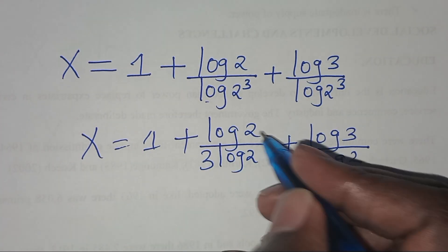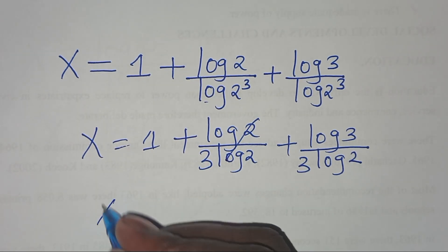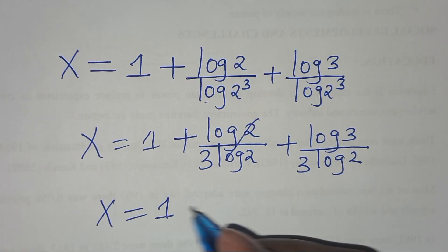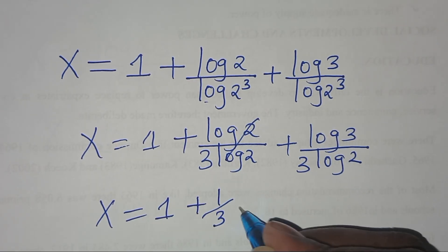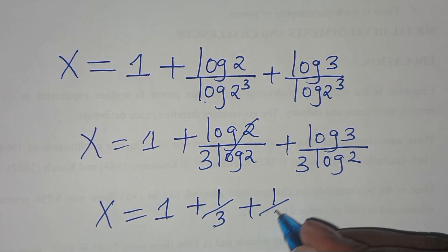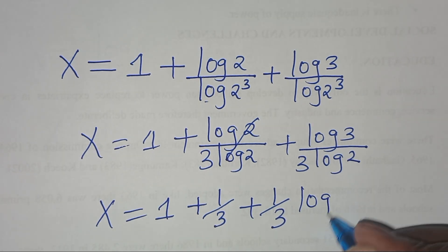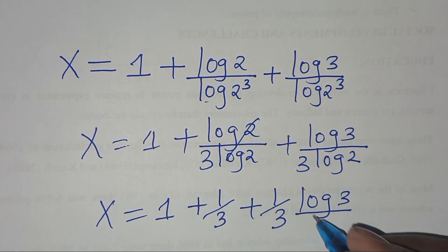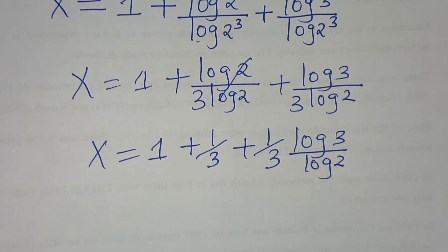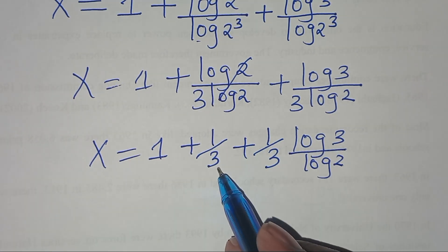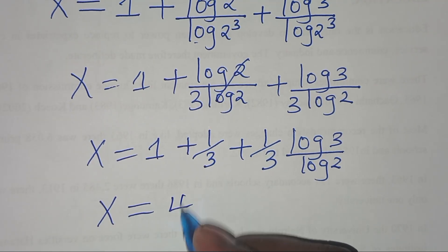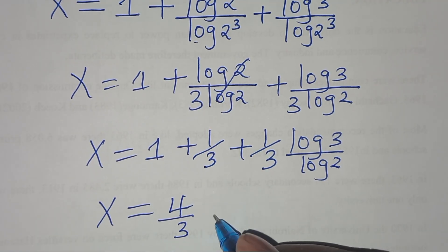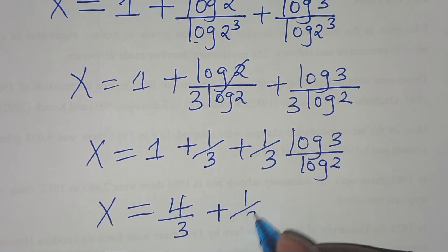So ln(2) and ln(2) here simplify, so that x is equal to 1 plus 1/3, plus (1/3)·ln(3) divided by ln(2). And 1 plus 1/3 is the same thing as 4/3, plus 1/3 times ln(3) divided by ln(2).